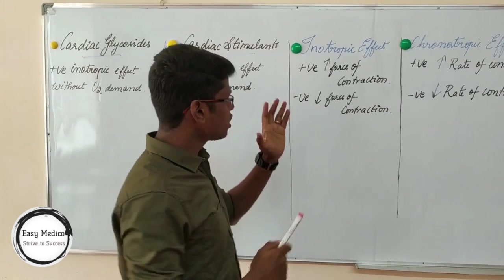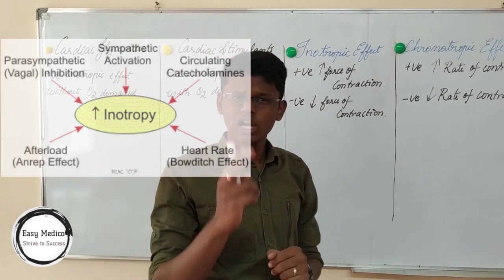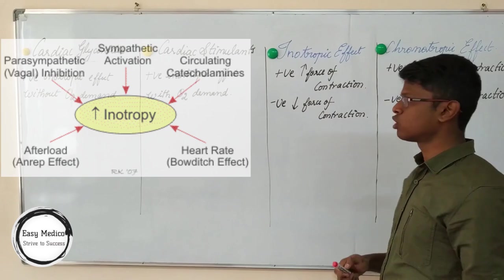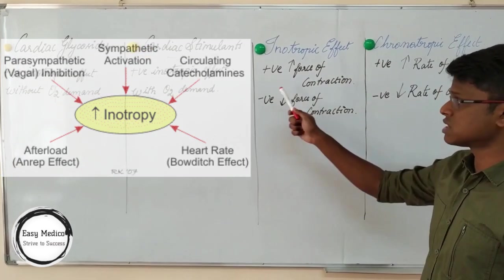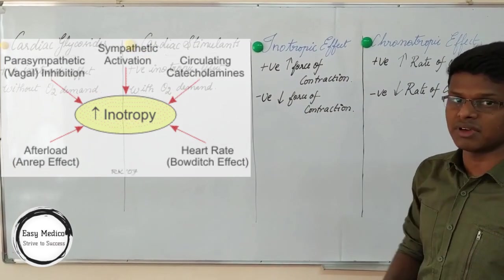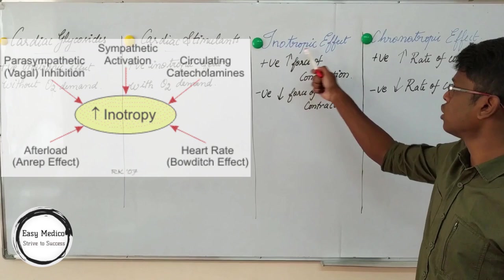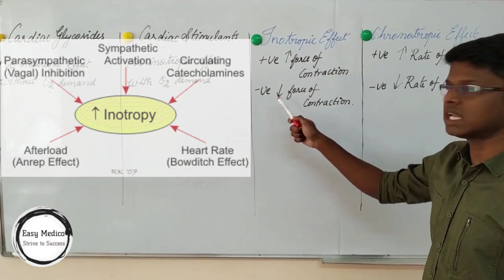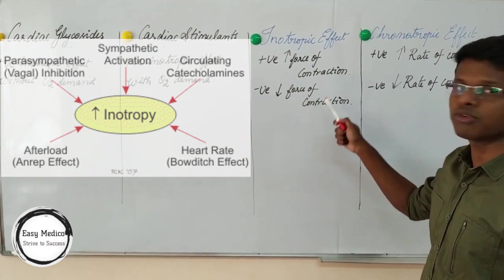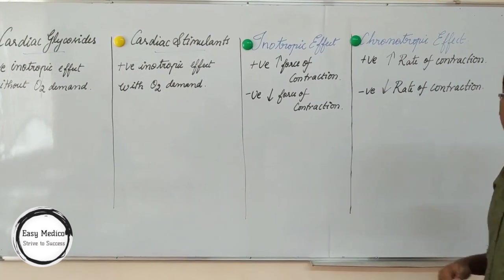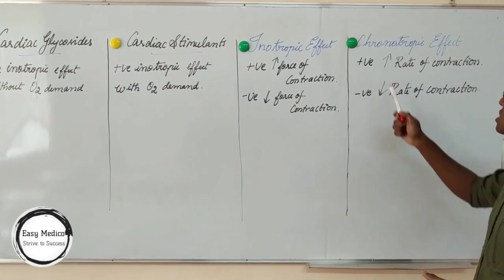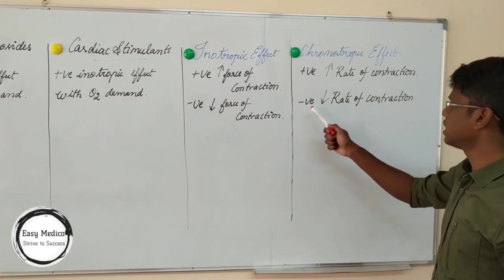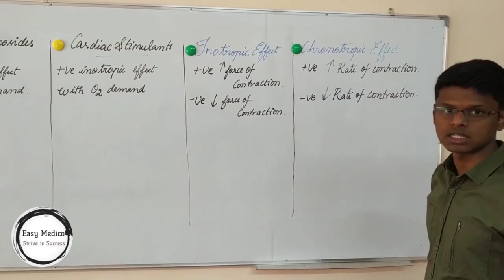Now, what is the inotropic effect? There are two terms: inotropic effect and chronotropic effect. Both have positive and negative components. The positive inotropic effect is an increase in force of contraction, and the negative is a decrease. For chronotropic effect, the positive condition is an increase in rate of contraction, and the negative condition is a decrease in rate of contraction.